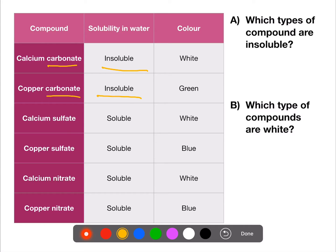The second part of the question asks us which type of compounds are white. We have three compounds which are white. The part which is common to all three is that they contain calcium.